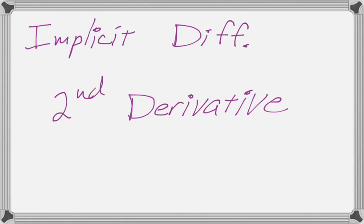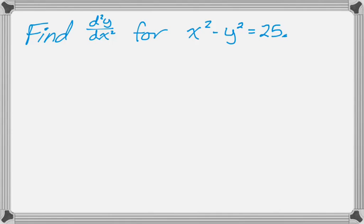Here we're going to find the second derivative of an implicitly defined function. So let's start with our function. What I want to do is find the second derivative of x squared minus y squared equals 25.